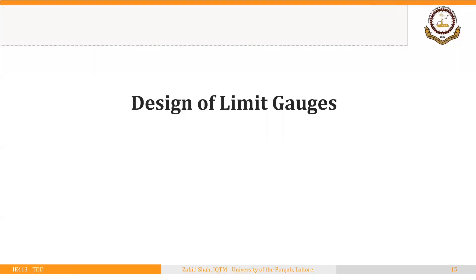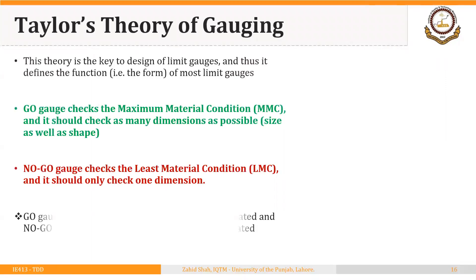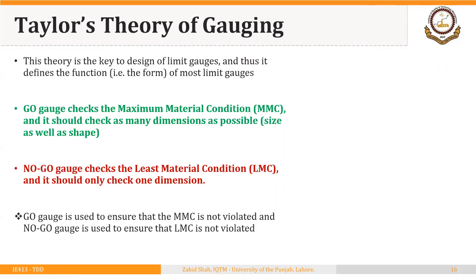Welcome back. In this segment we will discuss design of limit gauges. The key to the design of limit gauges is Taylor's Theory of Gauging. It defines the function and form of most limit gauges, and it has two parts: one related to the design of go gauges and the other to the design of no-go gauges.